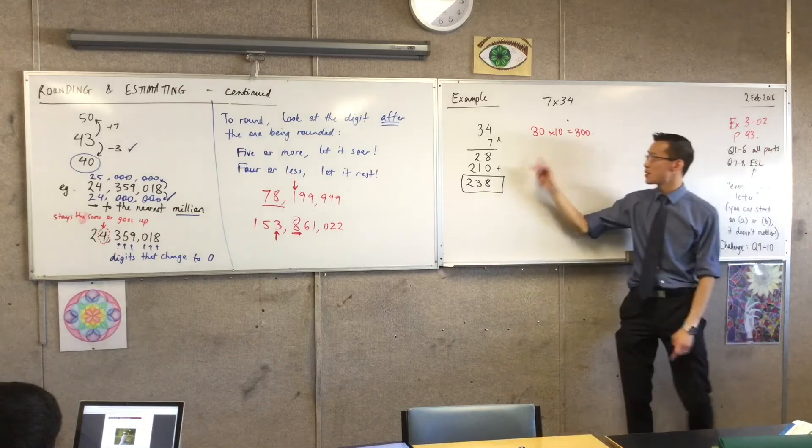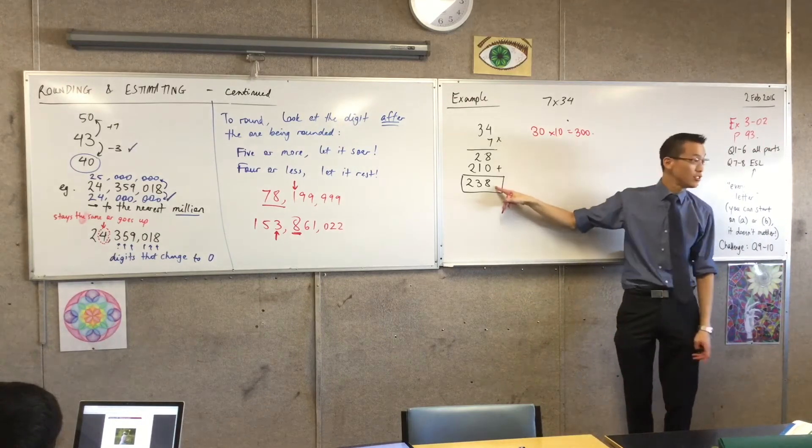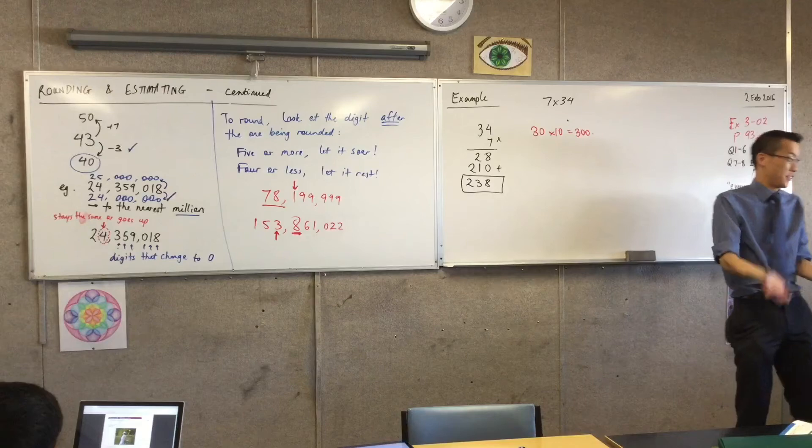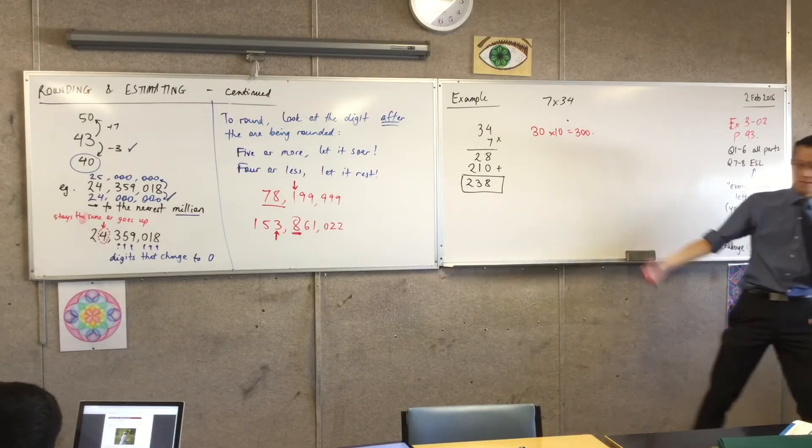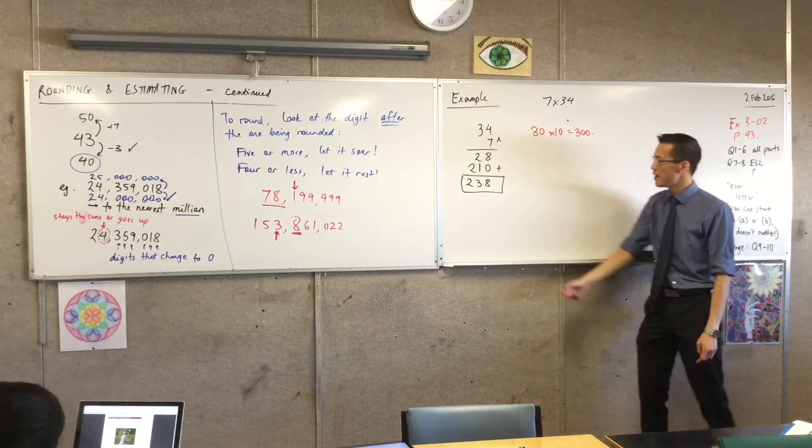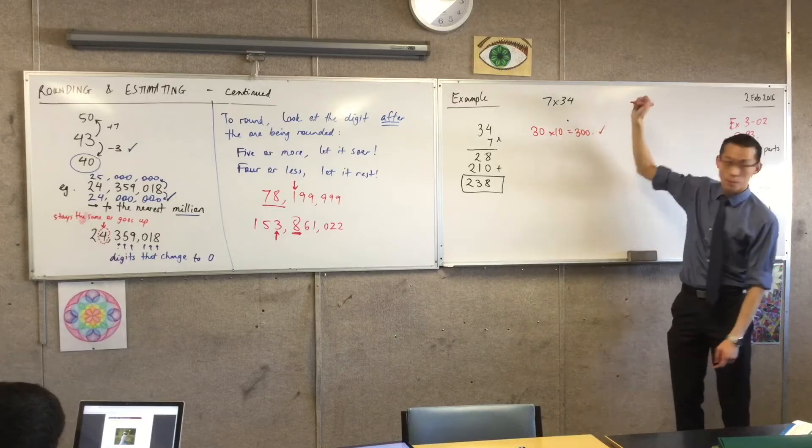Now, 300, as it happens, because of my rounding here, it is a little bit off, but at least I know I don't have the wrong number of zeros or something like that. I'm not half or double what I'm supposed to be, so I know I'm sort of in the right ballpark.